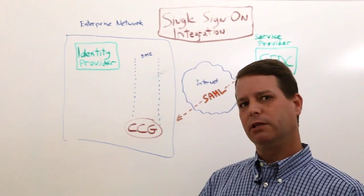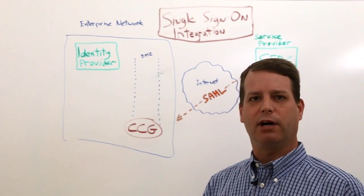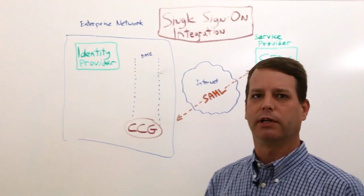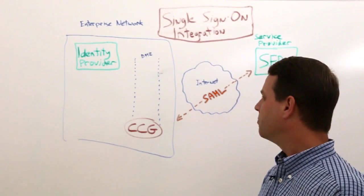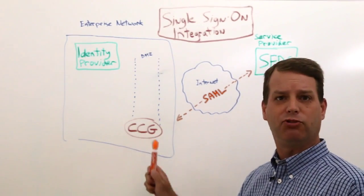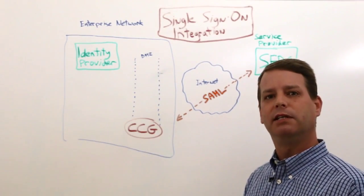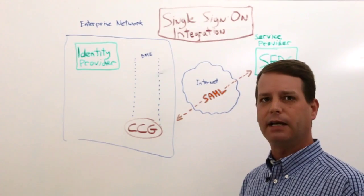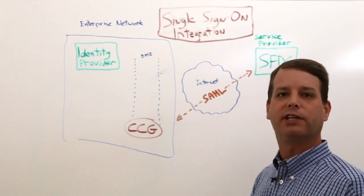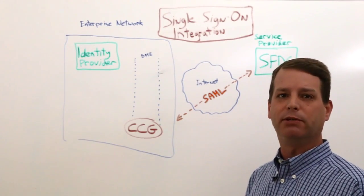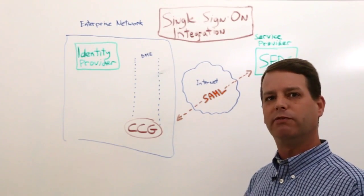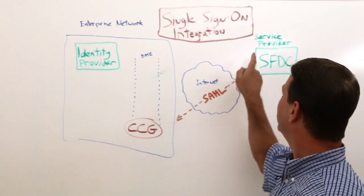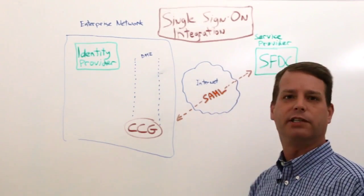I'll give you a quick overview of what the process looks like — it's a very simple process to do the onboarding as well. We have our CypherCloud Gateway dropped in this case into the DMZ, and that's going to allow us to support mobile use cases so people don't have to log in with VPN.